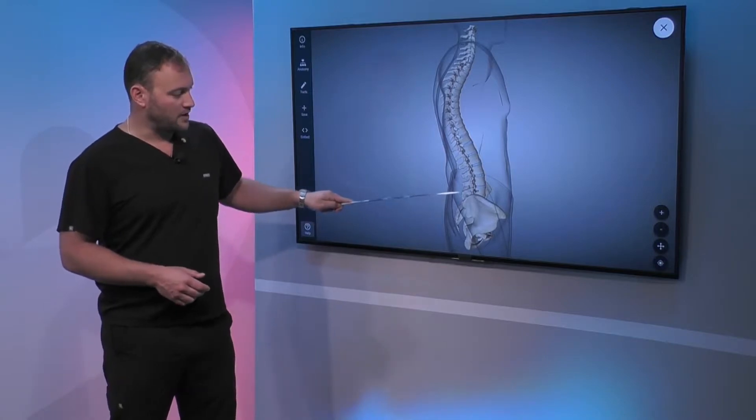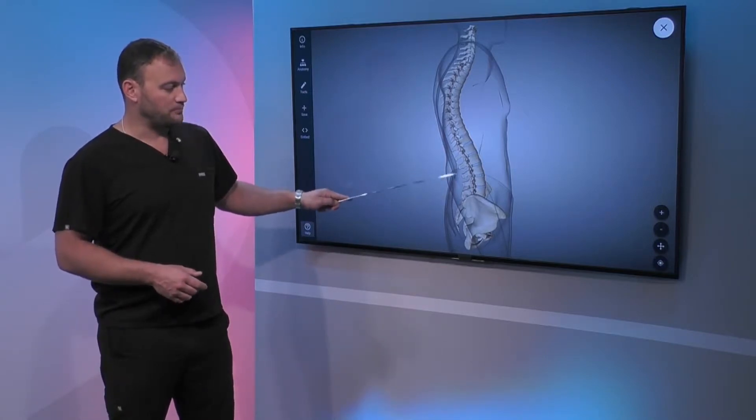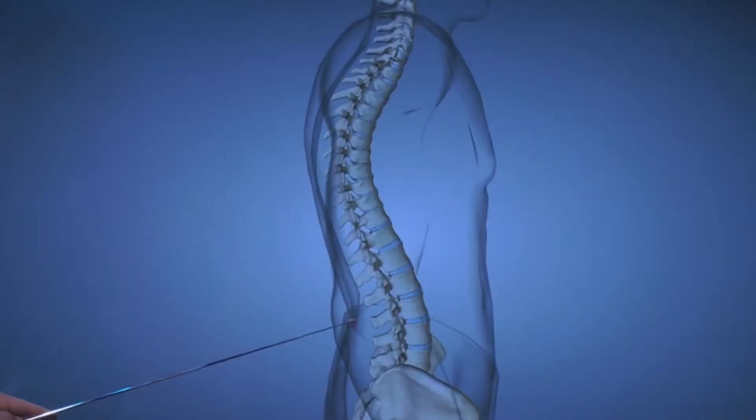For example, your lumbar spine normally has a backward bend, it's concave to the back and that's called lordosis. Now there's degrees of lordosis and kyphosis, therefore if this C-curve was less pronounced we would say that it's kyphotic.